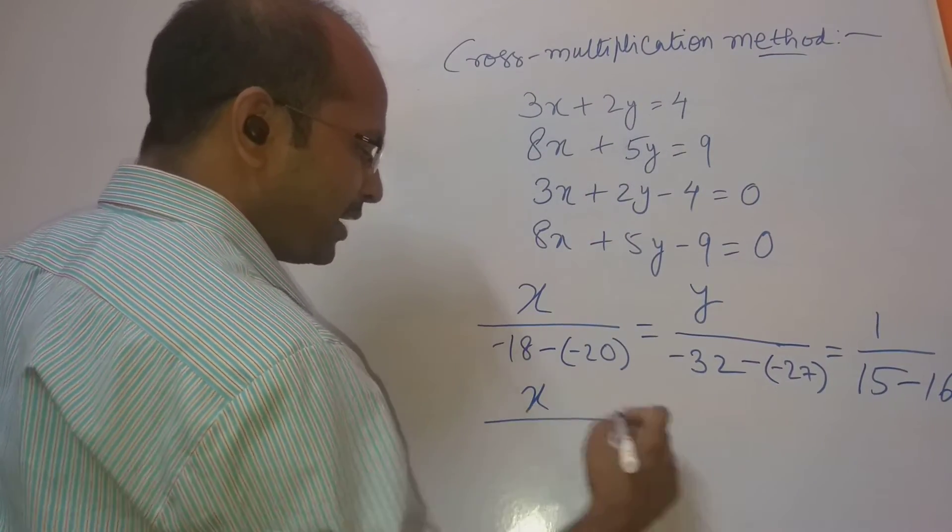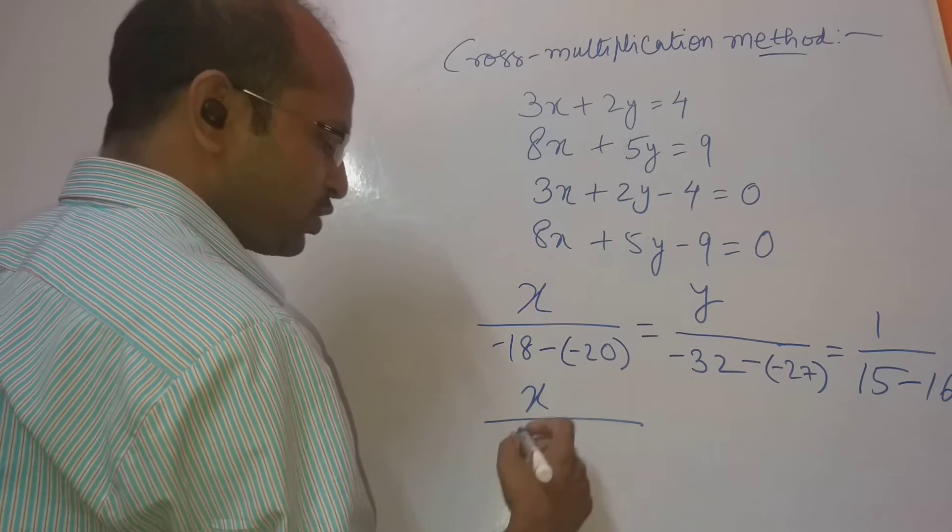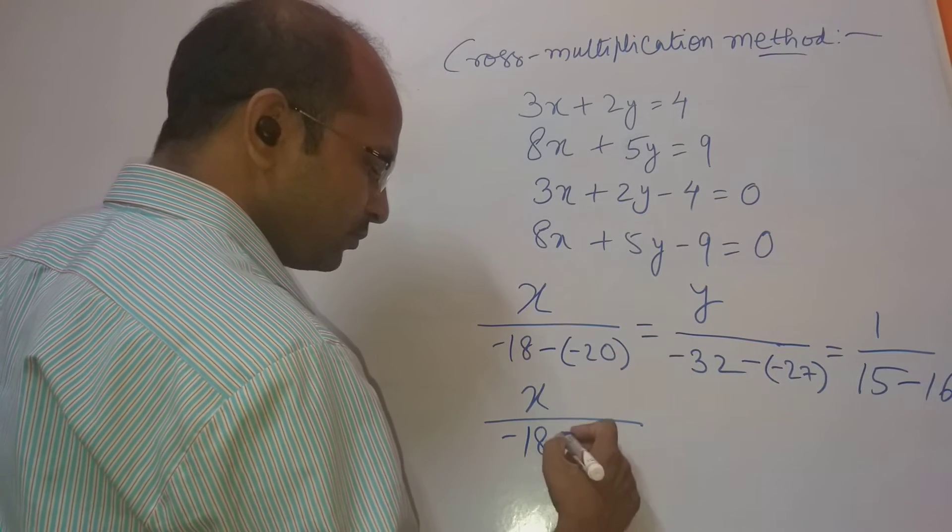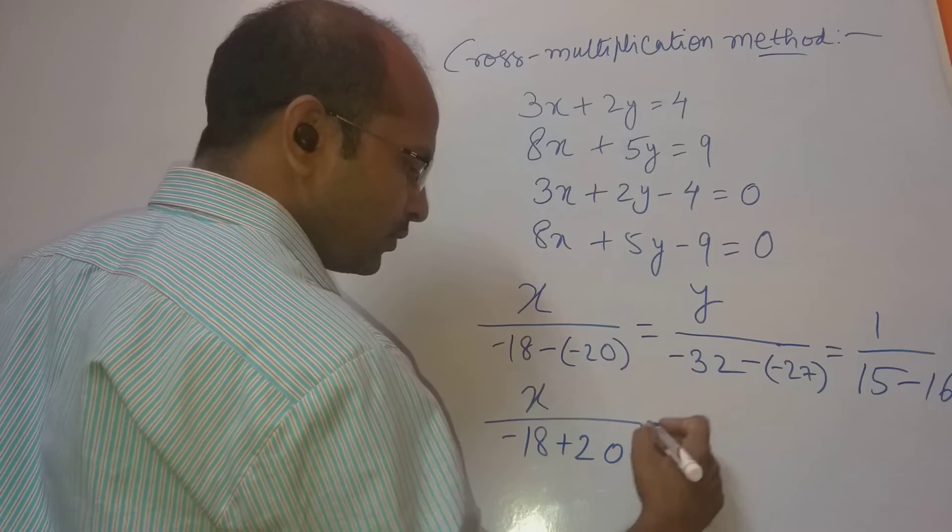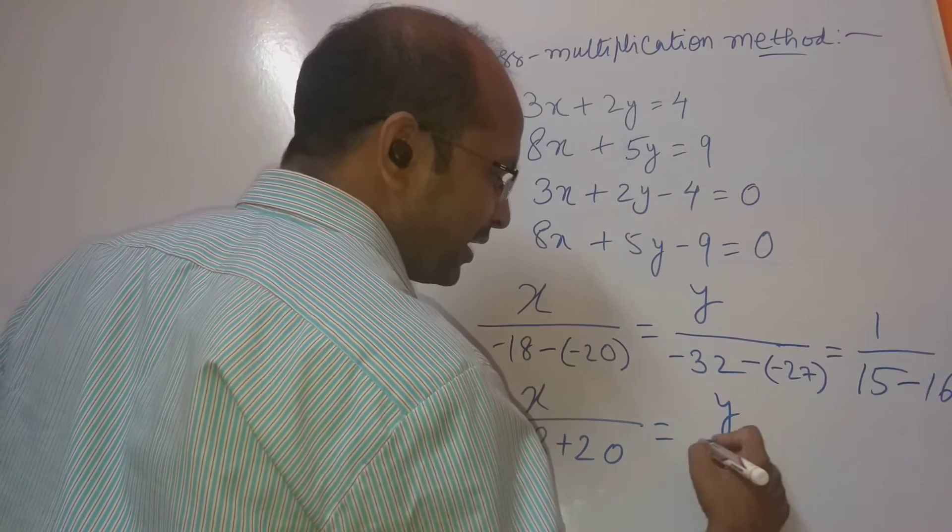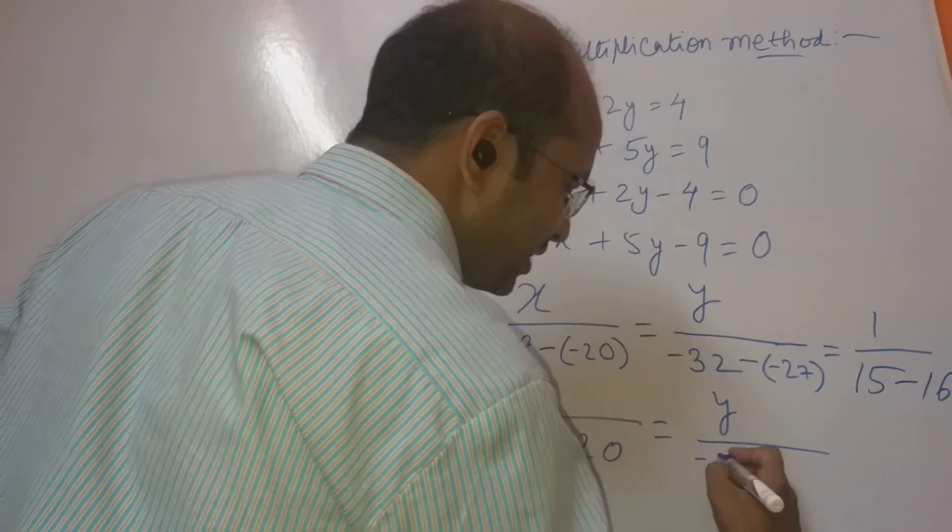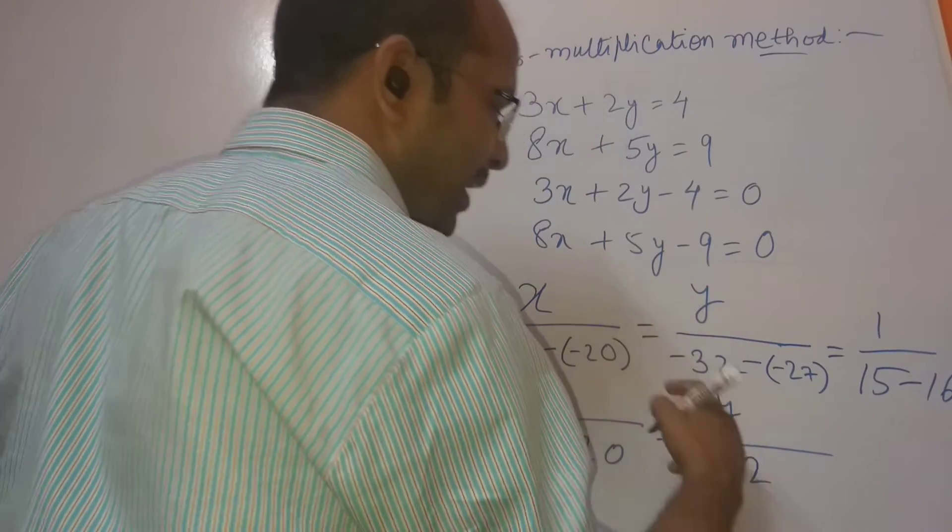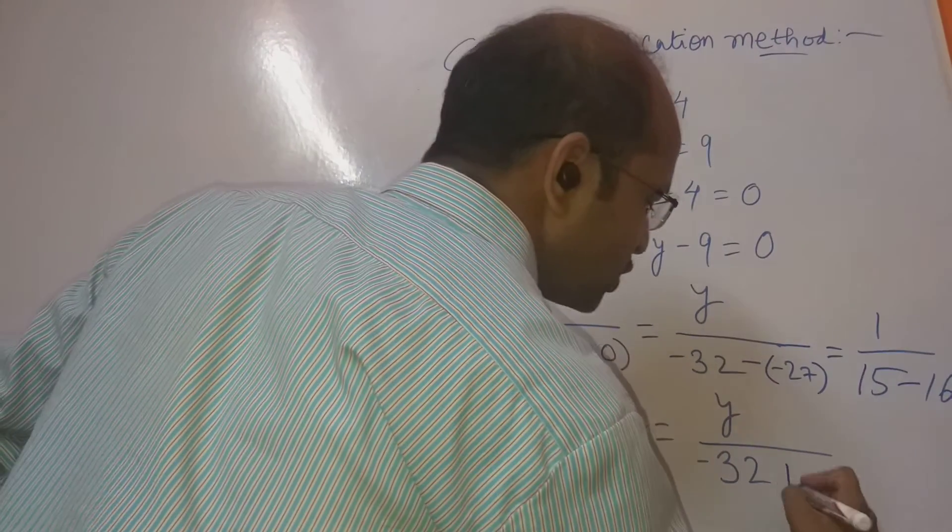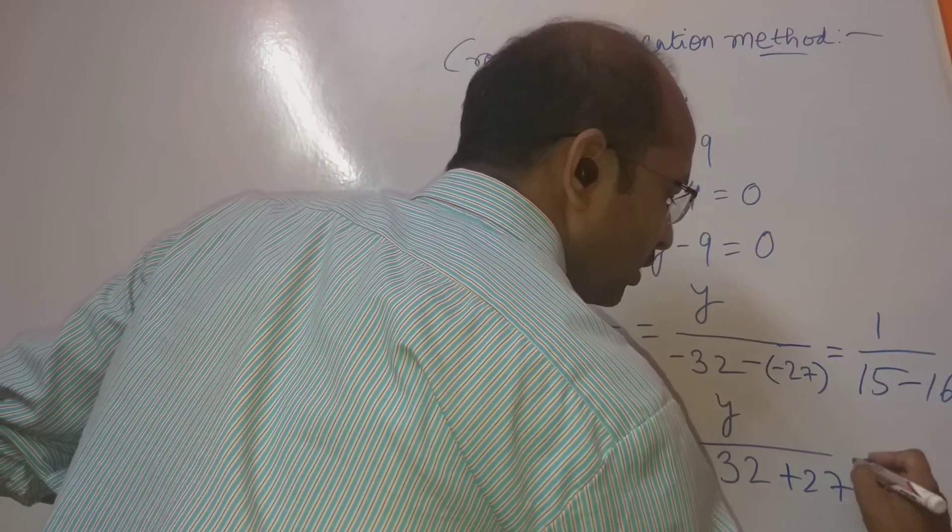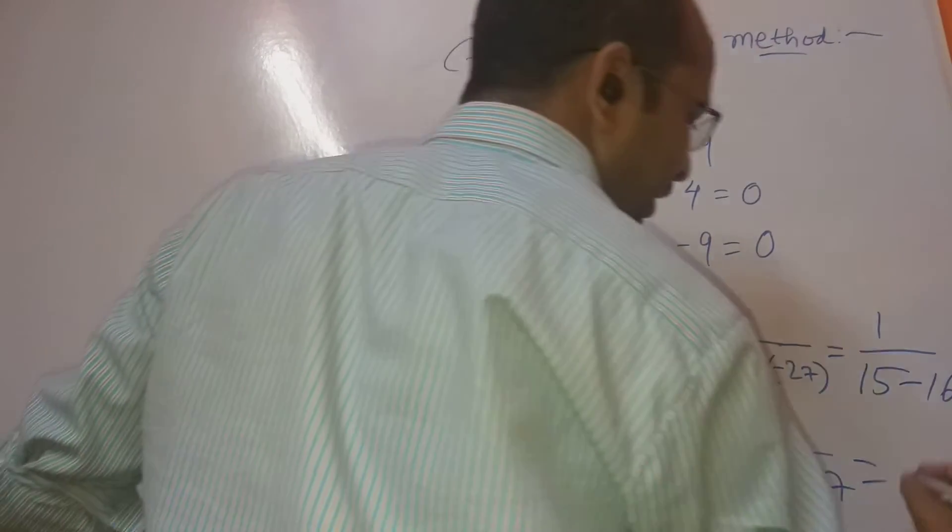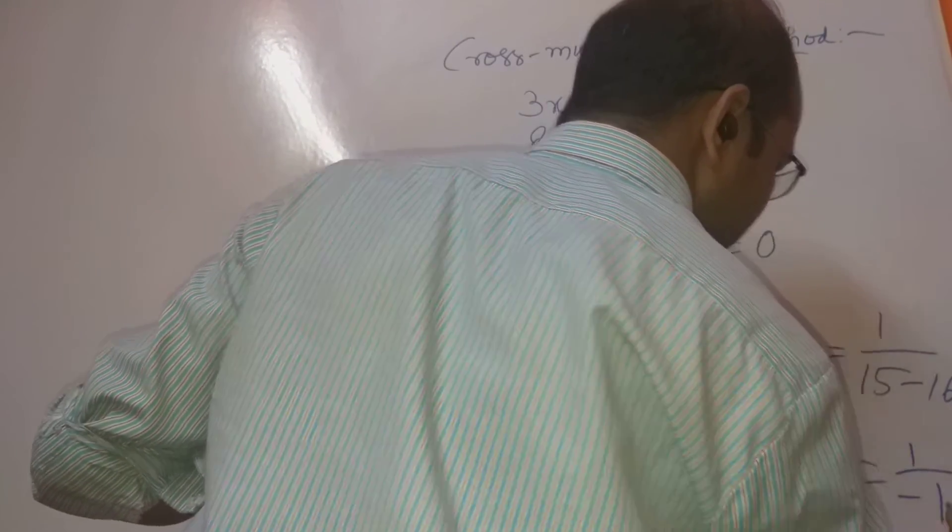x by minus 18 plus 20. What we are getting here is minus 32 plus 27. And what are we getting here? 1 by minus 1.